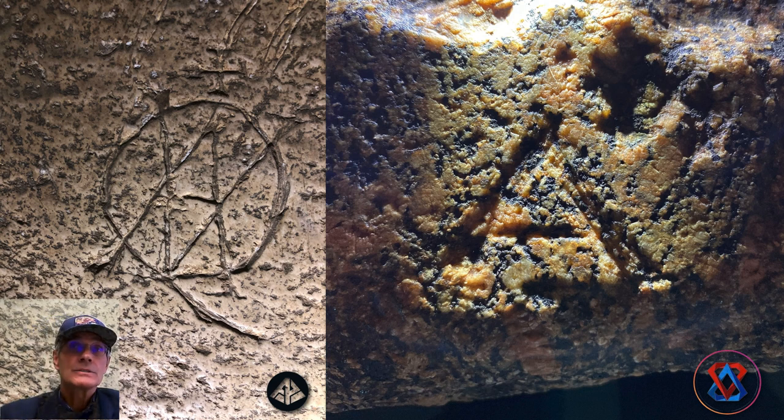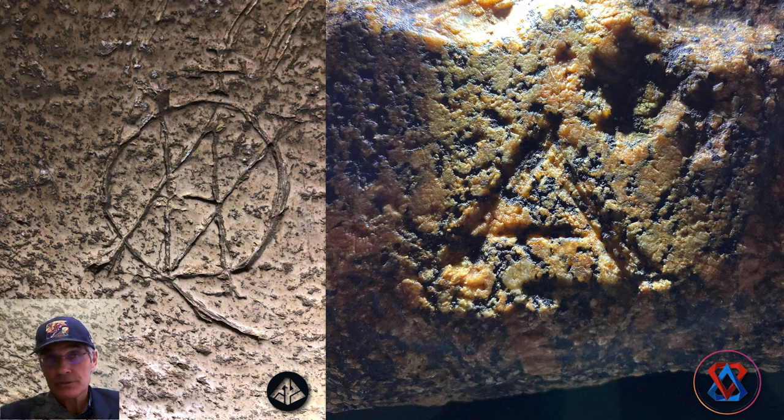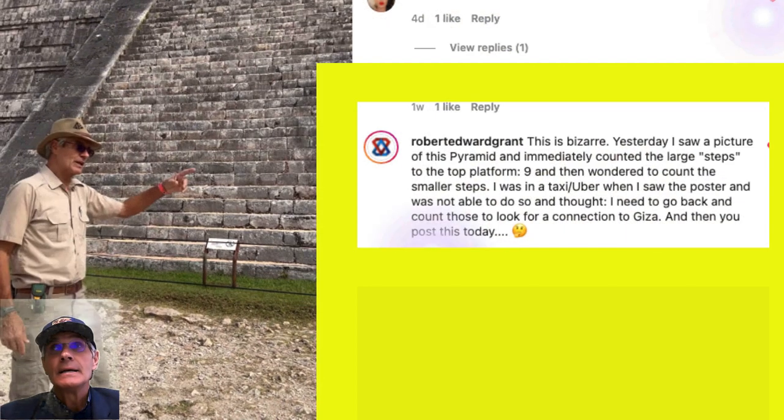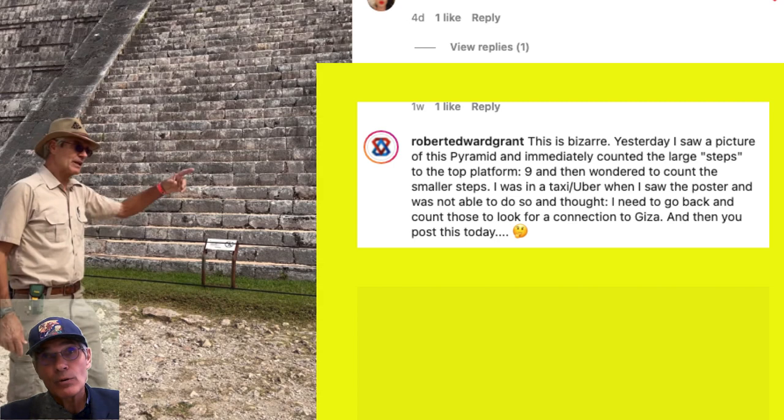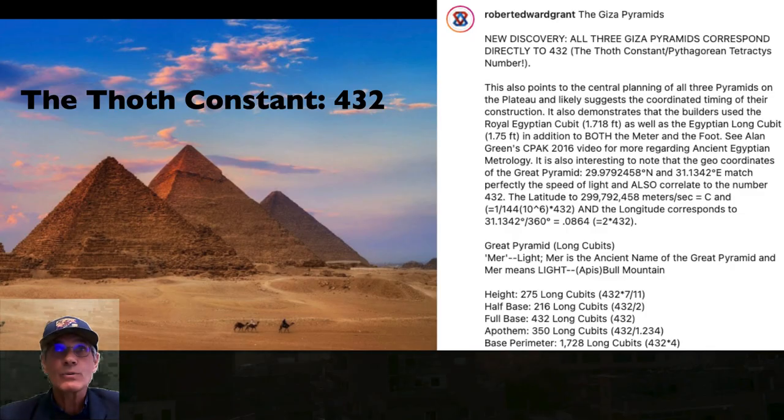So Robert Grant and I have this association. We both discovered alpha and omegas in the Great Pyramid. You should study mine on the left, his on the right there. And this happened just a couple days ago. These providences happen all the time. I was making a video there, captured one frame of the Pyramid of Chichen Itza. I was just there a couple weeks ago, and I was talking about the number of the stairs. So Robert Grant posts this. This is bizarre. Yesterday I saw a picture of this pyramid, and immediately counted the large steps to the top of the platform, 9, and I wondered about the smaller steps. Then you post this today. So the very day he was wondering about these steps, I'm posting a video about the number of them. So that kind of connection happens with us often.